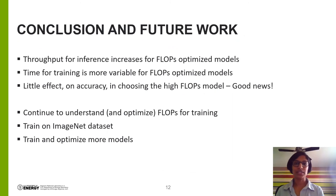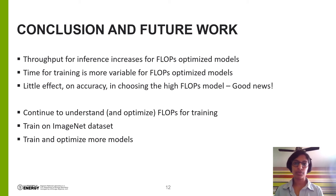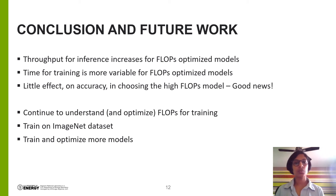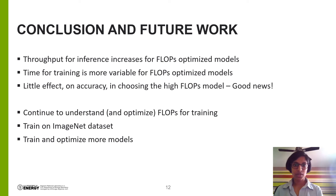In conclusion, the throughput for inference through a FLOPs-optimized neural network can be greatly improved compared to original models by using DeepHyper to perform an architecture-centric parameter search. However, the time to train a high-FLOPs model is more variable — in some cases it takes the same amount of time as the original model, and in some cases it takes more time. This isn't necessarily a huge problem if training is done only once and the model is used largely for inference purposes, but it will be a future point of investigation. Furthermore, there is very little effect on accuracy in choosing the high-FLOPs model, which indicates that high-FLOPs models have the potential to be just as useful as the original models.